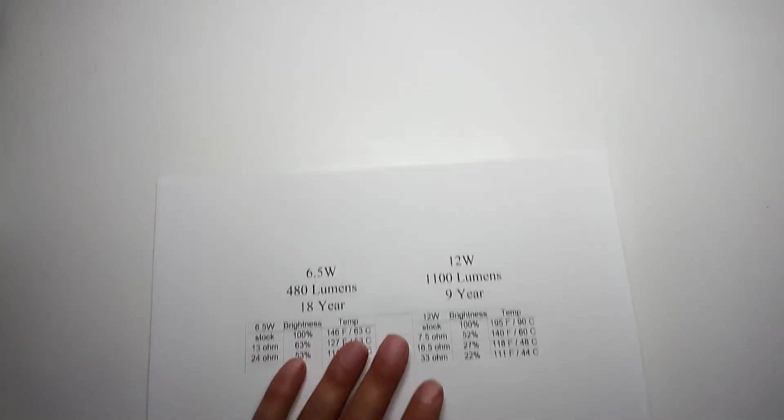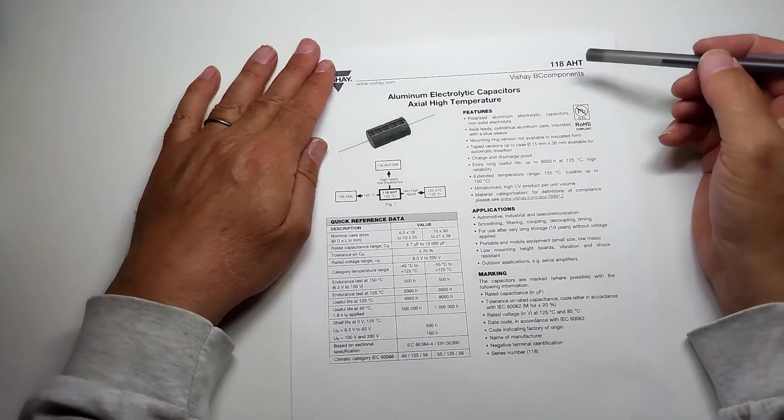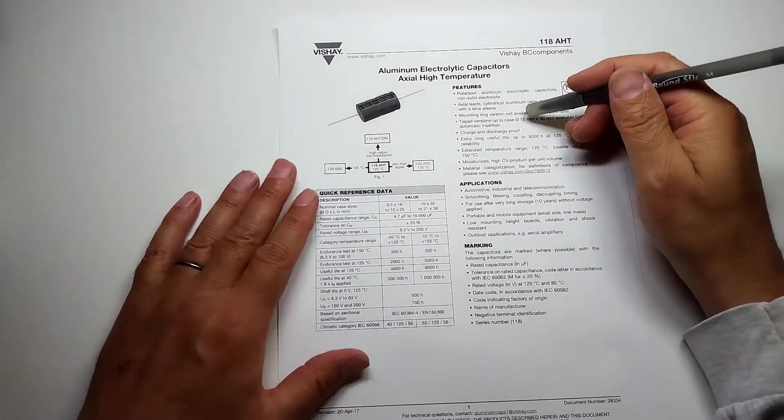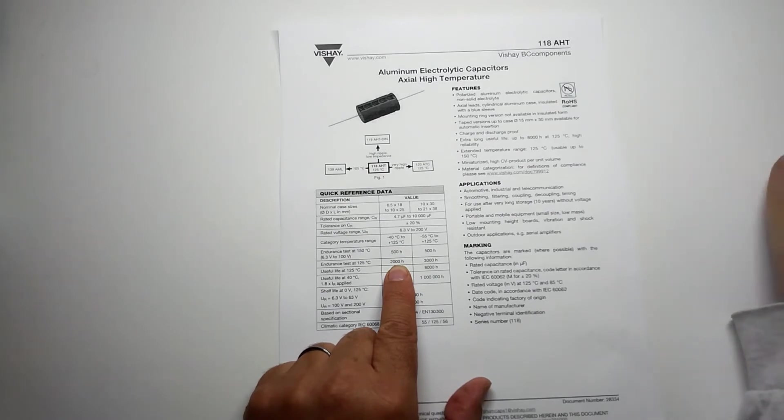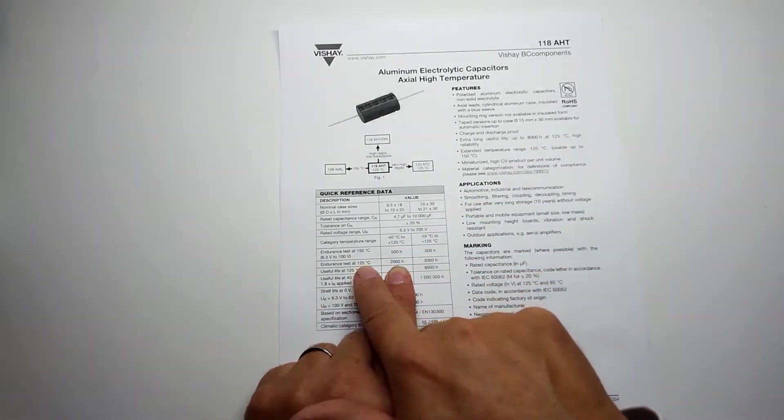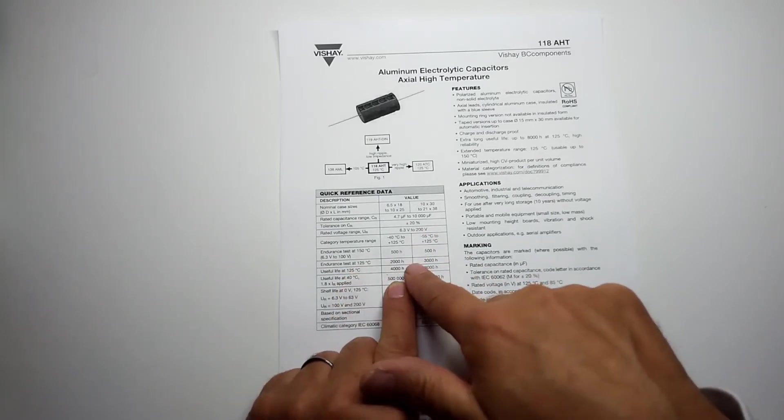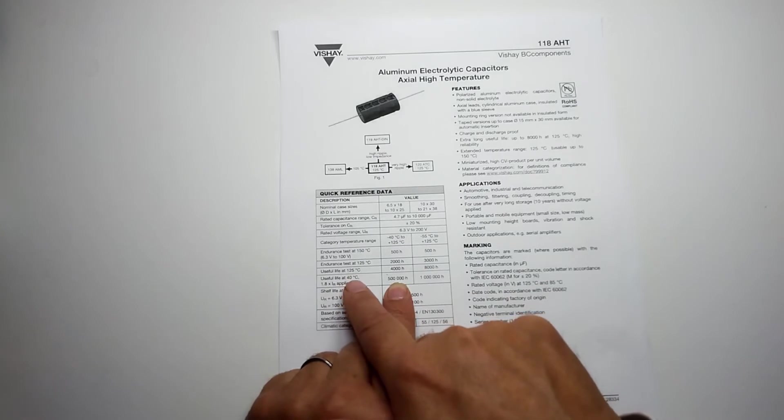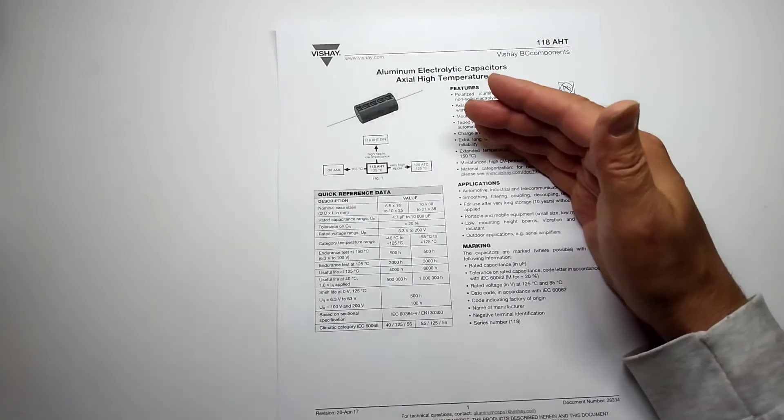There are two main things that affect the life of electronics. The first is temperature, and you can actually see this on a Vishay capacitor data sheet. It's very interesting. If you look, the endurance of the capacitor at 125°C is 2000 hours. The useful life is double that.